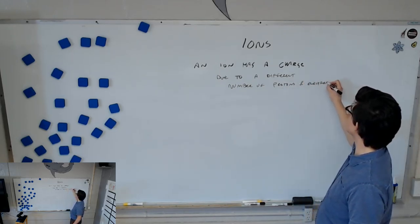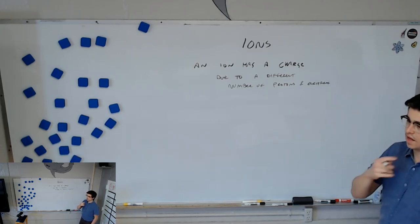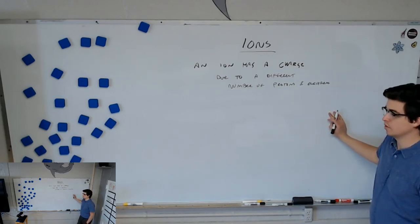We can't just say subatomic particles because that would also include neutrons, which don't matter to this at all. Yeah, they're neutral. So, ions. An ion has a charge due to a different number of protons and electrons.